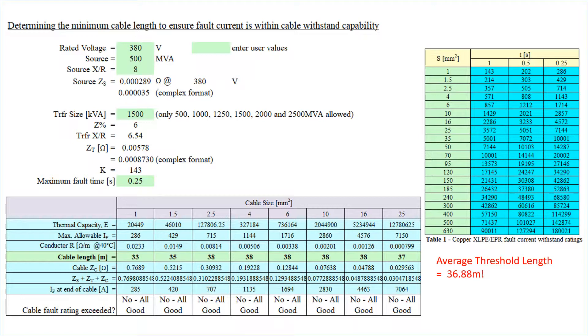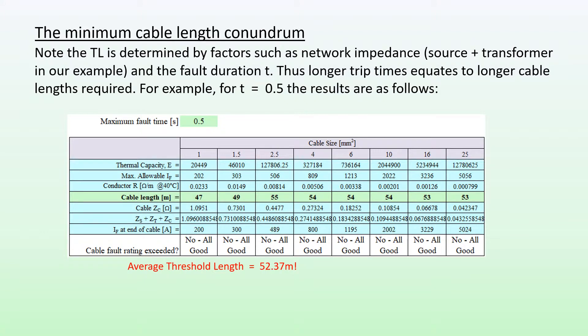Note that the TL is determined by factors such as the network impedance and the fault duration. For example, if I increase my fault time from 0.25 to 0.5 seconds, I get the following results. With maximum fault time of 0.5 seconds, I see that my threshold length for a 1 mm² cable has now gone up to 47 meters, 49 for 1.5, 55 for 2.5 mm² cable, and so on. So with a longer fault duration, I need a longer length before my fault current drops below the maximum fault current cable rating.